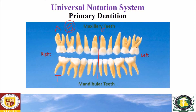Because the sequence continues: J, K, L, M, O, P, Q, R, S, and the last one is T. So this completes the exercise for the primary or deciduous dentition.